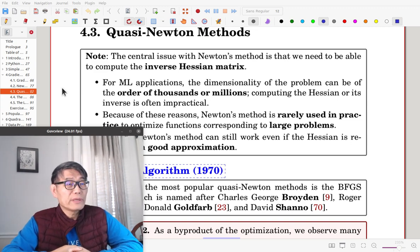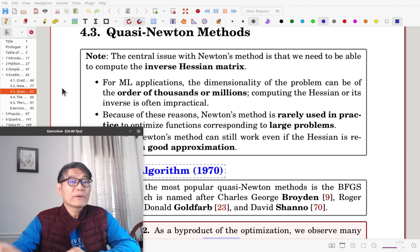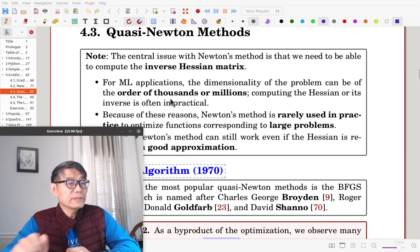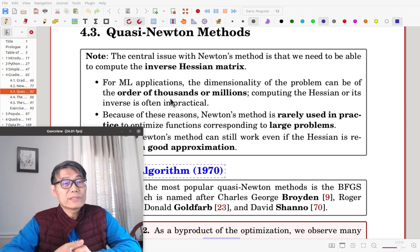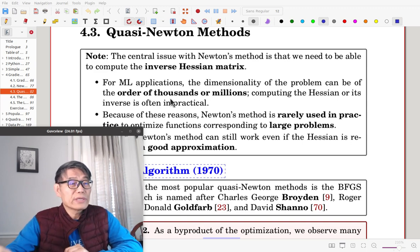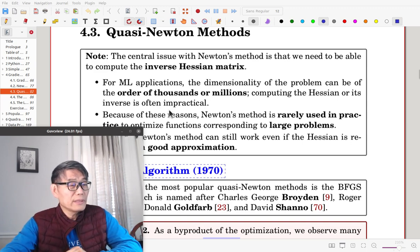For machine learning applications, the dimensionality of the problem can be of the order of a thousand or millions. So the computation of a Hessian and its inverse is often very expensive and even impractical.